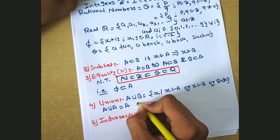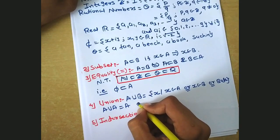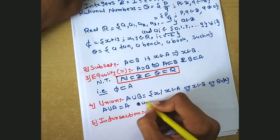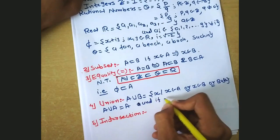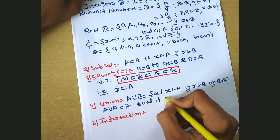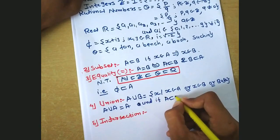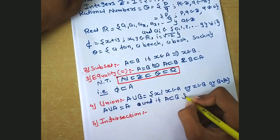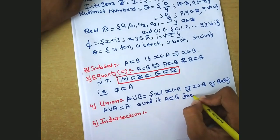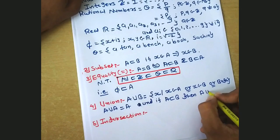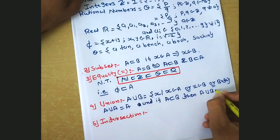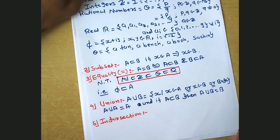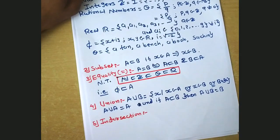We know that A union A is equal to A. And if A is a subset of B, then A union B is equal to B, because A is already a subset of B.